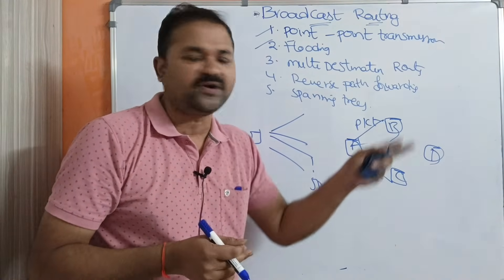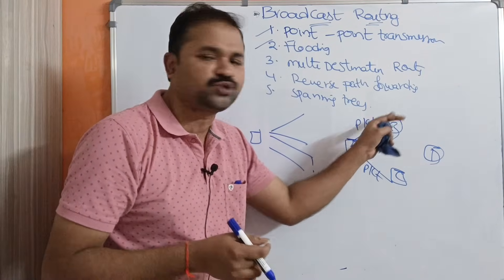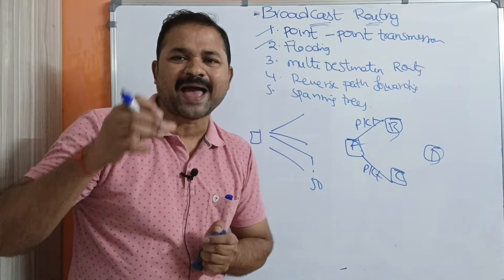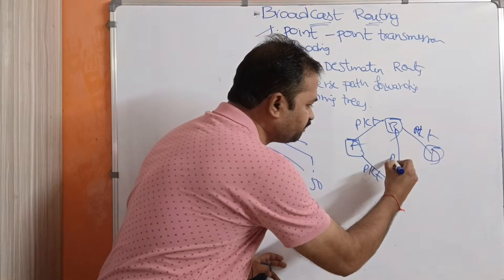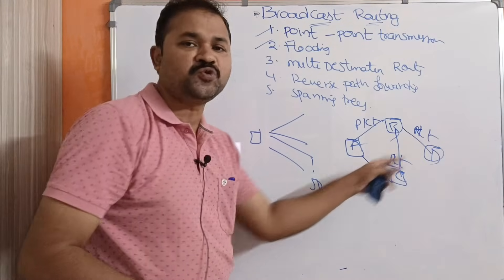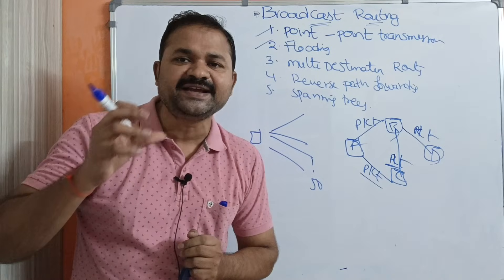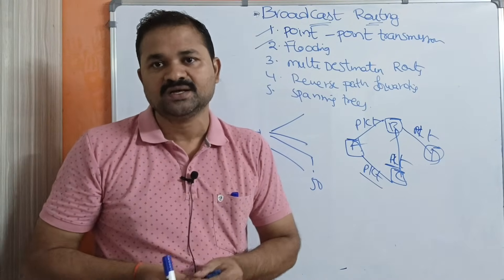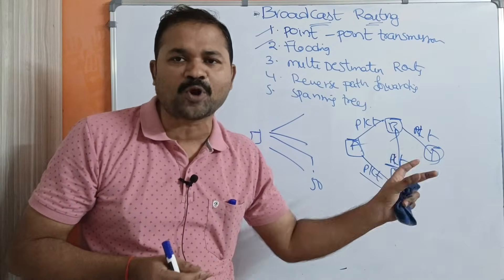So B will transmit the packet to D as well as C. If we observe here, router C receives two packets containing the same data — so duplication occurs. The major disadvantage of flooding is that a vast number of duplicate packets will be generated, causing excessive traffic.